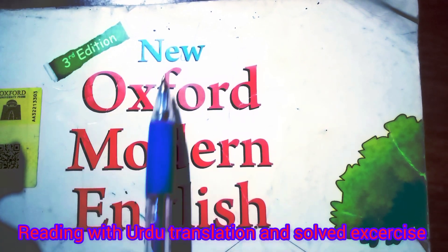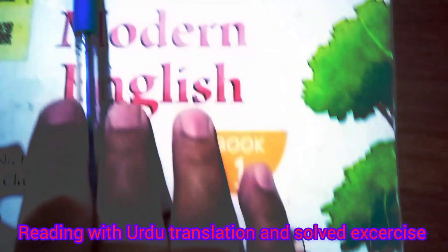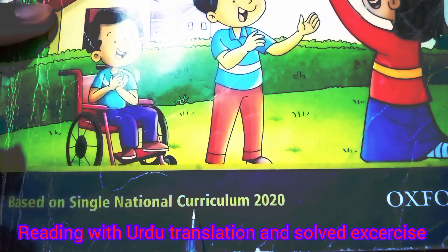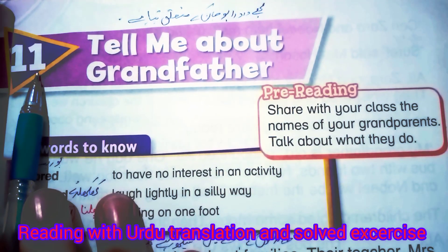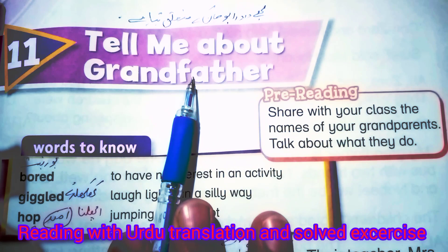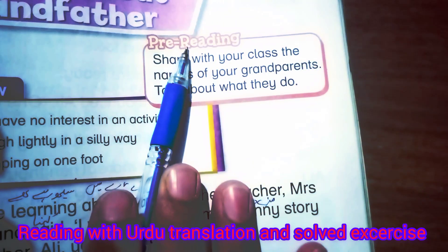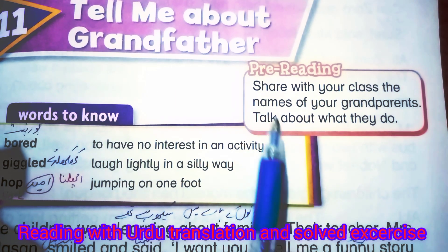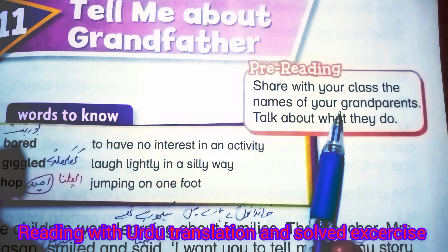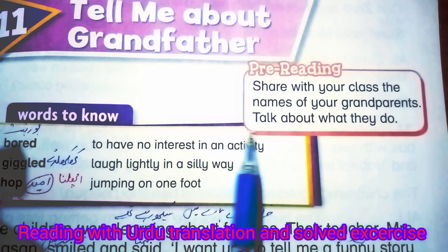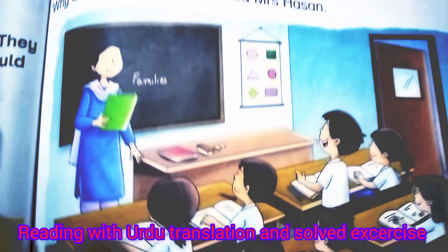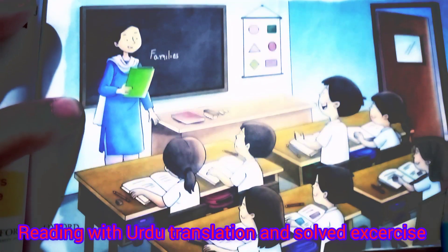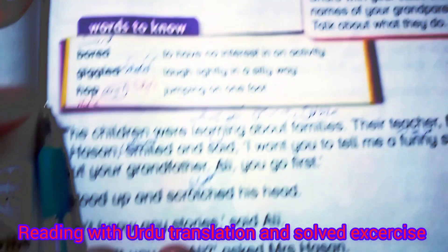Bismillahirrahmanirrahim, Assalamualaikum. New Oxford Modern English, Third Edition, Book One, based on Single National Curriculum 2020. Today we discuss Unit Number 11: 'Tell Me About Grandfather.' Pre-reading: we give students the concept of sharing their grandfather's name and discussing his routine with the class — the names of grandparents and what they do. The picture shows a teacher who has written 'Families' on the blackboard, with children sitting in the classroom discussing families-related topics.